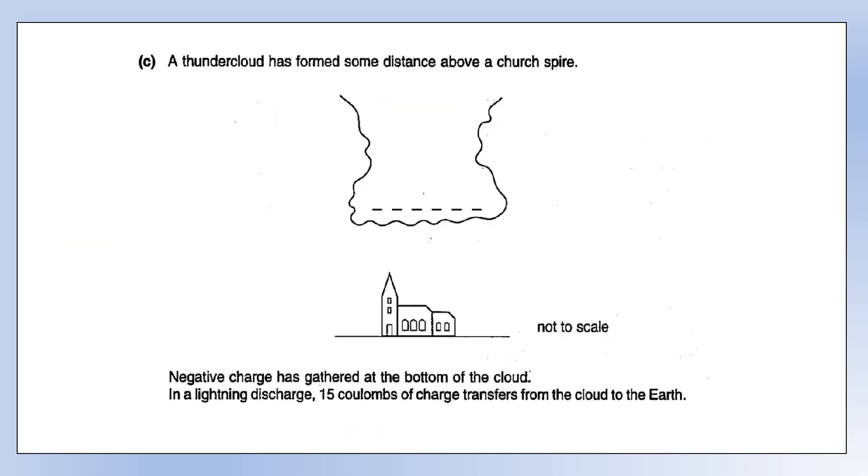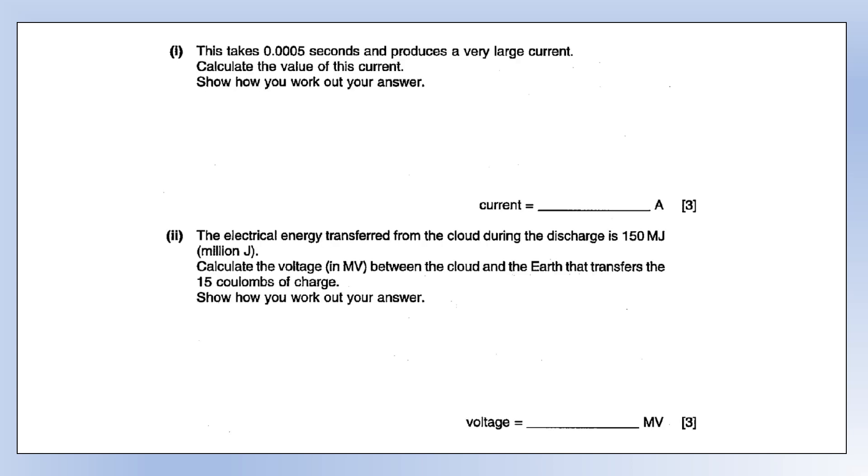A thunder cloud has formed some distance above a church spire. Negative charges gather on the bottom of the cloud. In a lightning discharge, 15 coulombs of charge transfers from the ground to the earth. This takes 0.0005 seconds, which is going to give us a large current. Calculate how big the current is.